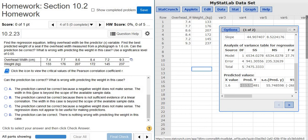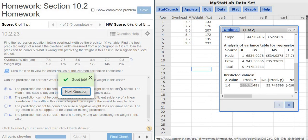So far so good. The width in this case is beyond the scope of available sample data. Yes, that seems to be the correct choice. Let's go with it. That's it.